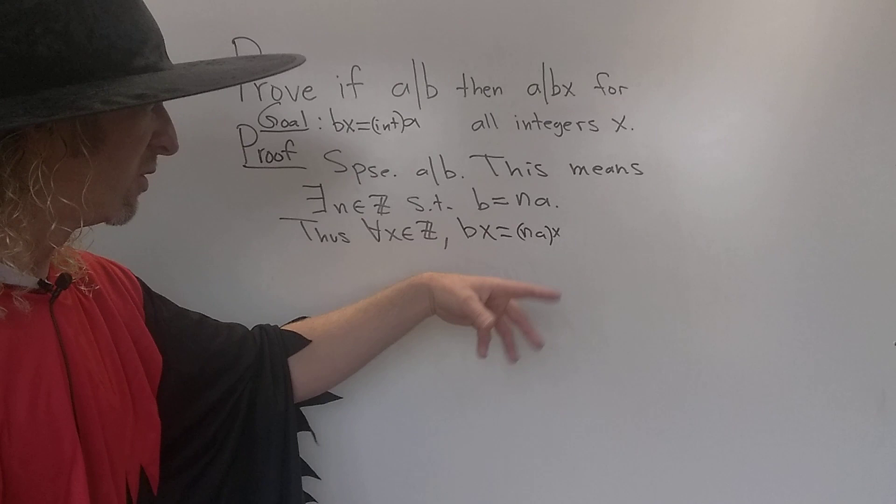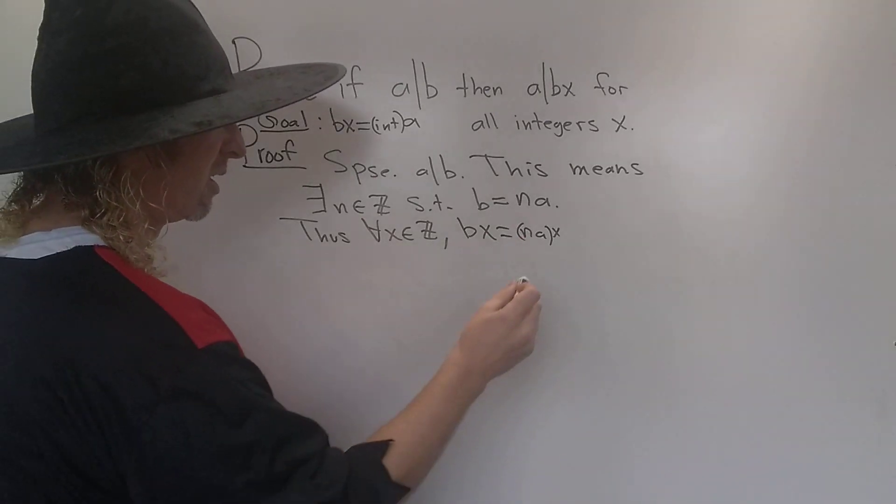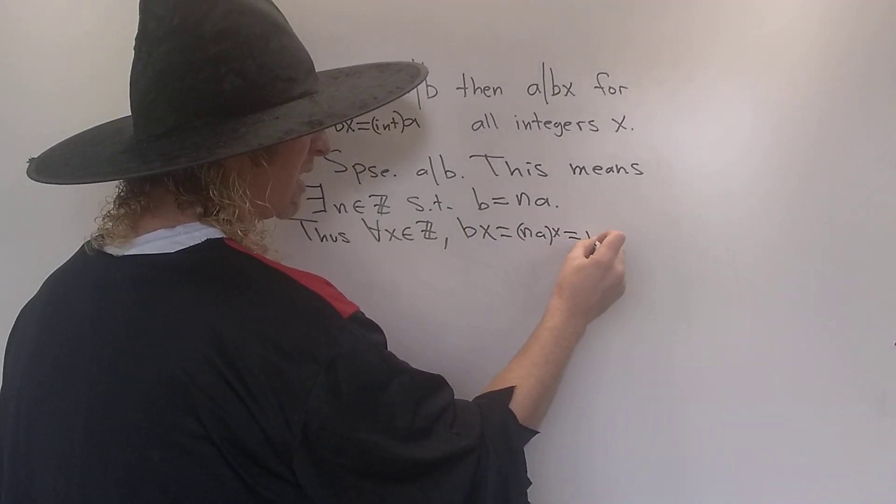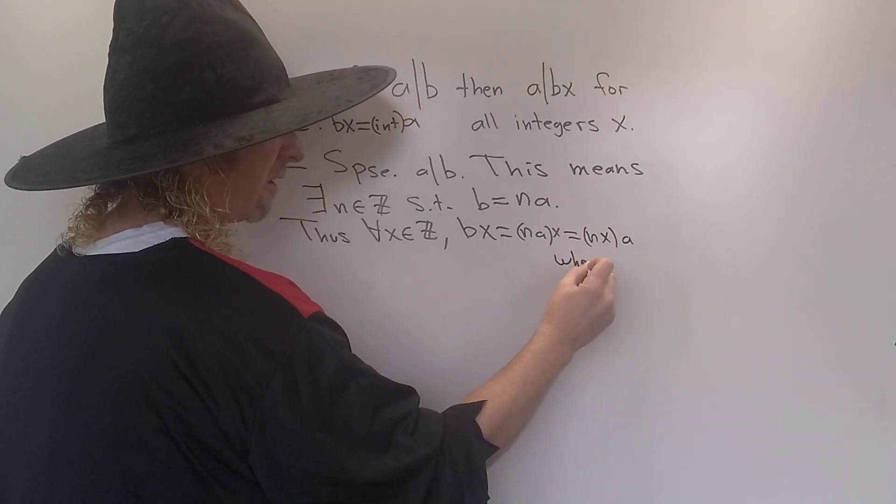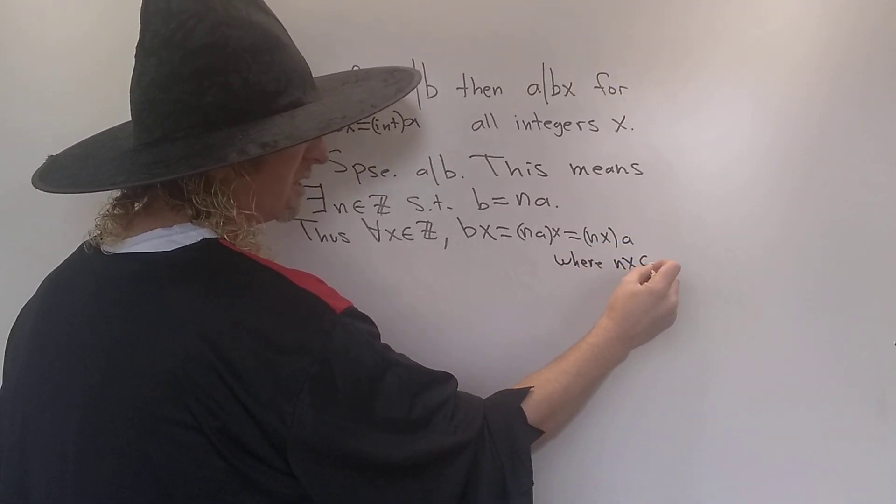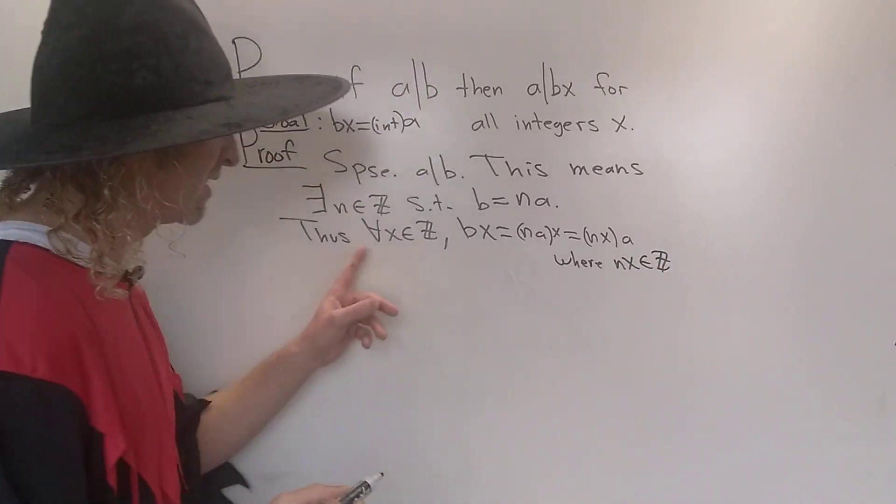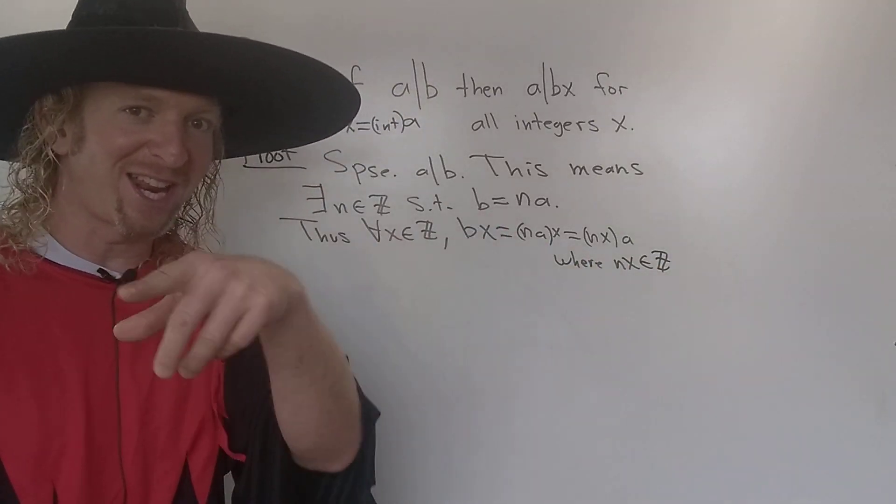And multiplication here is commutative and associative, right? You have integers. So you can write this as nxa, where nx is an integer. Because n is an integer and x is an integer, therefore nx is an integer.